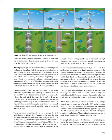When flying straight and level and following a selected ground track, the preferred method of correcting for wind drift is to head the aircraft — at a wind correction angle — sufficiently into the wind to cause the aircraft to move forward into the wind at the same rate the wind is moving it sideways. Depending on the wind velocity, this may require a large wind correction angle or one of only a few degrees. This wind correction angle is also commonly known as the crab angle. When the drift has been neutralized, the aircraft follows the desired ground track.